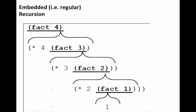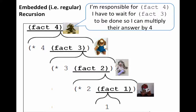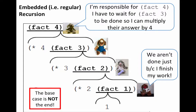Let's look at regular or embedded recursion. Our factorial calls four times fact of three, which calls three times fact of two, which calls two times fact of one. In CS60, we think about each of those being executed by one of these stuffed dogs. The first one says, I'm responsible for fact of four and I have to wait for fact of three to be done so I can multiply their answer by four. When we get to fact of one, we know that call is done — it returns one because we hit our base case. But the key idea is that the base case is not the end. Fact of one returned its answer to fact of two, fact of two returns its answer to fact of three, and finally fact of four gets its answer. It's this idea of waiting for each of the next recursive calls to execute and return their value.